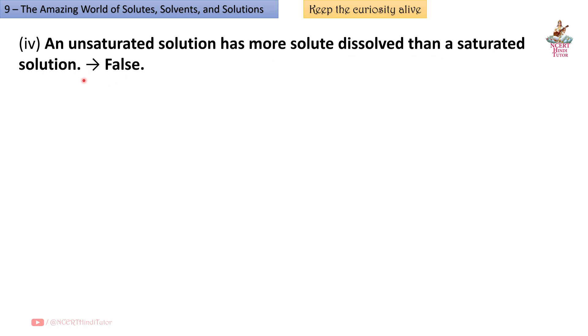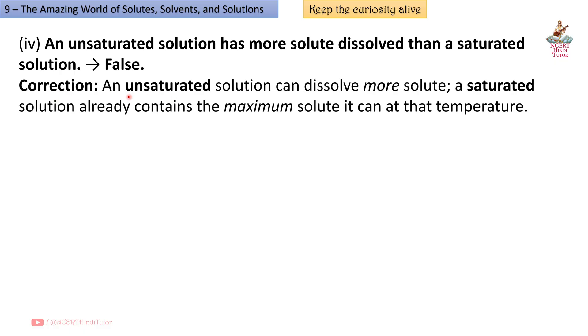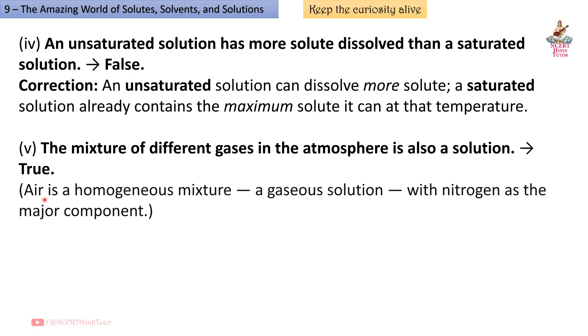Fourth: An unsaturated solution has more solute dissolved than a saturated solution. So friends, this is false. Correction: An unsaturated solution can dissolve more solute. A saturated solution already contains the maximum solute it can at that temperature. Fifth: The mixture of different gases in the atmosphere is also a solution. So friends, this is true. Air is a homogeneous mixture, a gaseous solution with nitrogen as the major component.